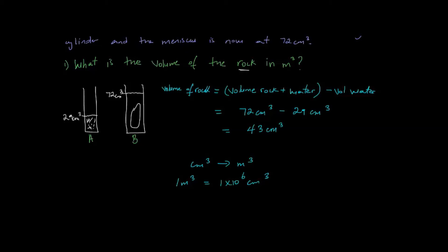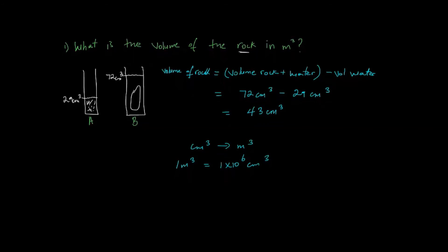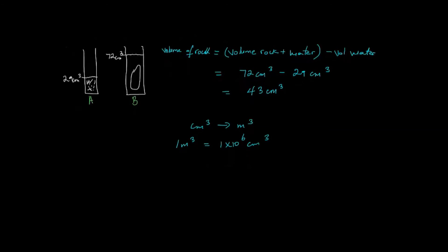So in converting 43 centimeters cubed to meters cubed, we need to divide 43 centimeters cubed by 1 times 10 to the 6.